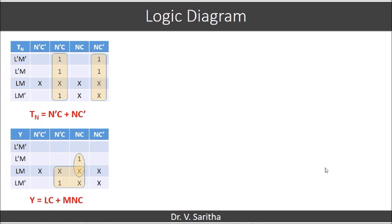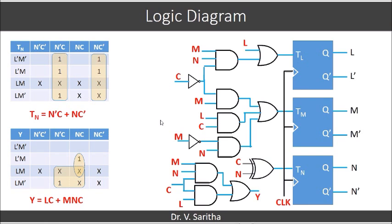Getting the expression for Y, it is L·C + M·N·C. Using these expressions, if we draw the circuit, we get the logic diagram. The logic diagram is given as follows: TL = L + M·N·C̄, TM = M·C̄ + L·C + M̄·N, TN = C exclusive-or N, and Y = M·C + L·C.